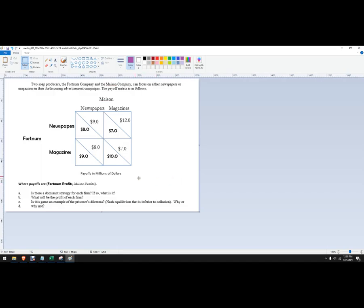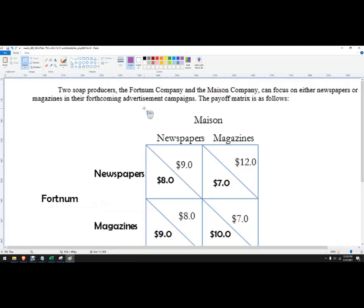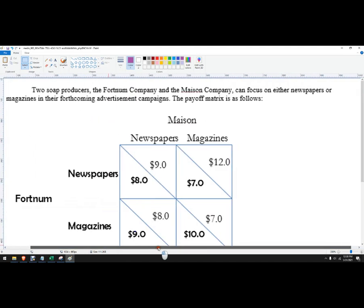Hello out there to you. In this problem we've got a game theory duopoly. We've got two soap producers, Fortnum and Mason, who can either focus on newspapers or magazines for their advertising campaigns.